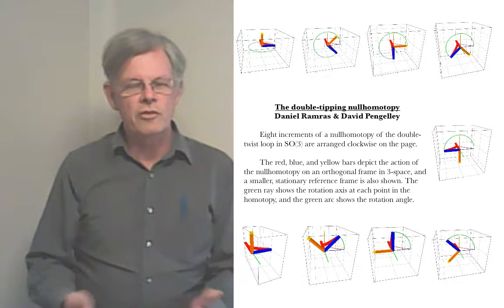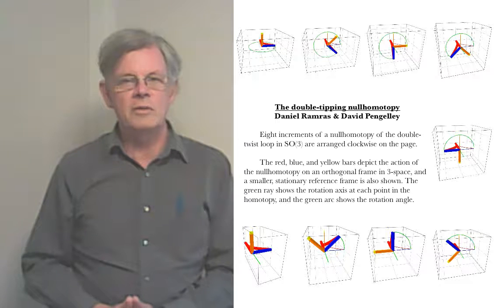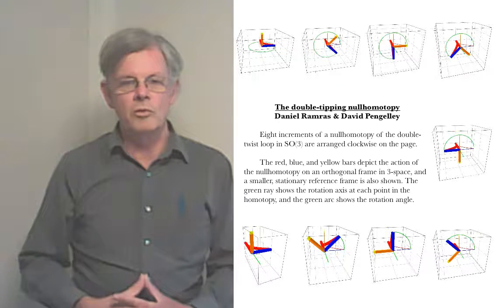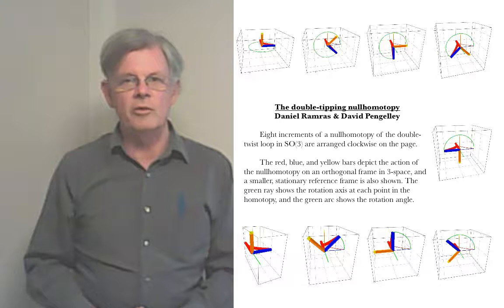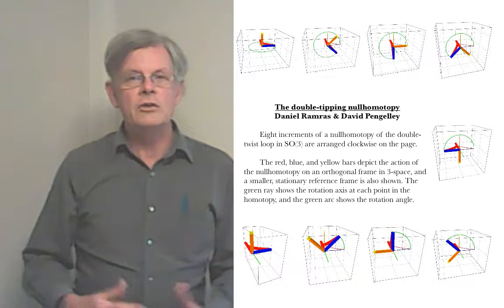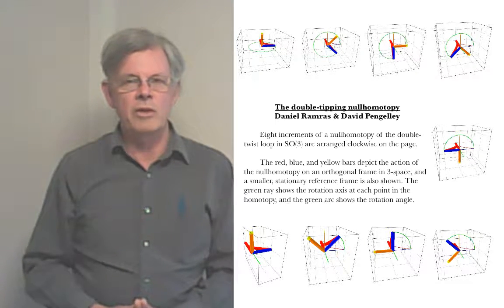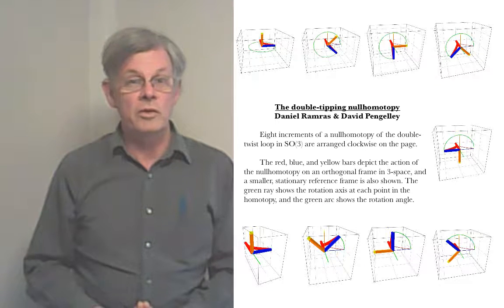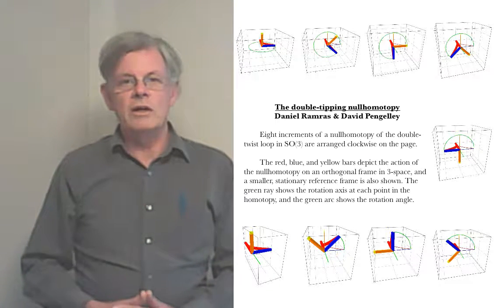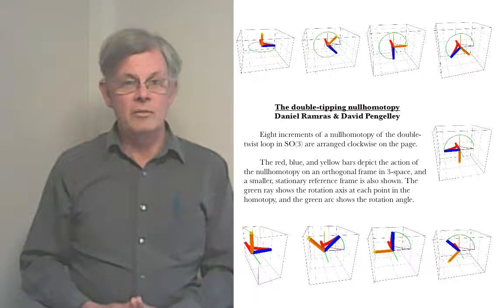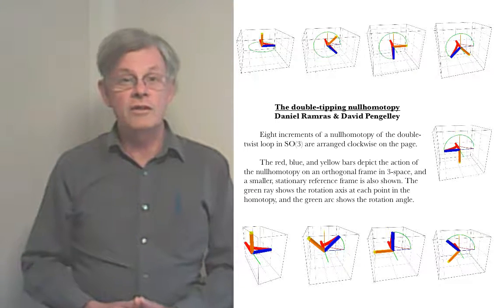There's one other feature of the null homotopy I'd like to ask you to look at. In our paper, we discuss what we call hinge or clamshell behavior. And if you look at the thumb in this null homotopy — the blue tube — you'll see a lot of very interesting hinge and clamshell behavior if you watch closely what the thumb is doing. So I hope you've enjoyed learning about the null homotopy of the double turn, and I hope you'll enjoy showing it to your friends.